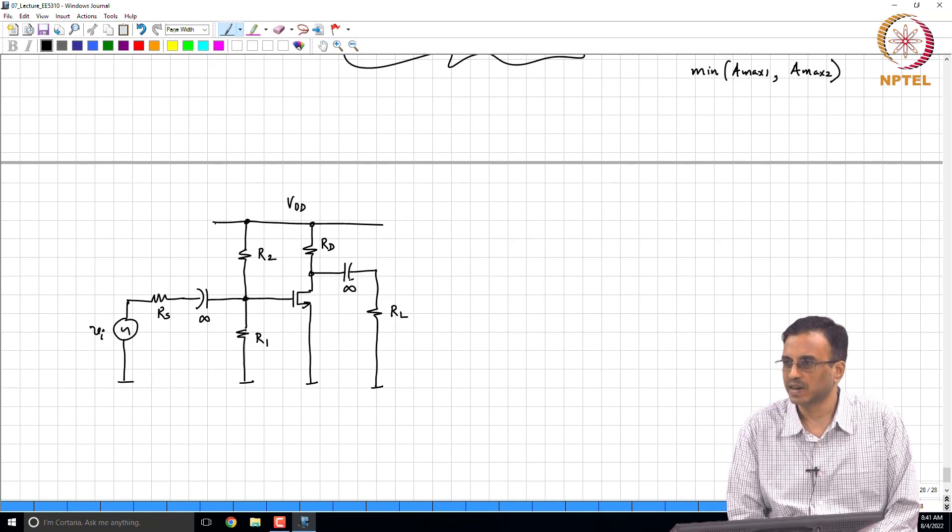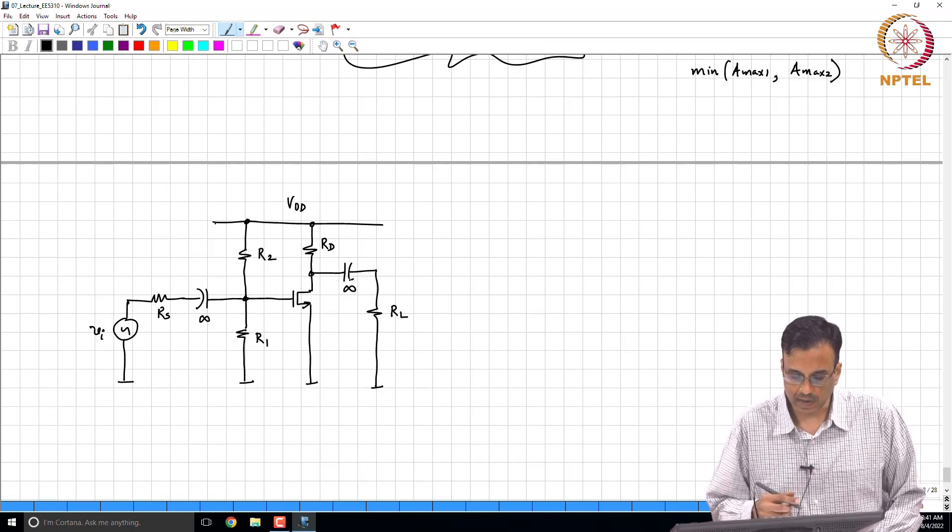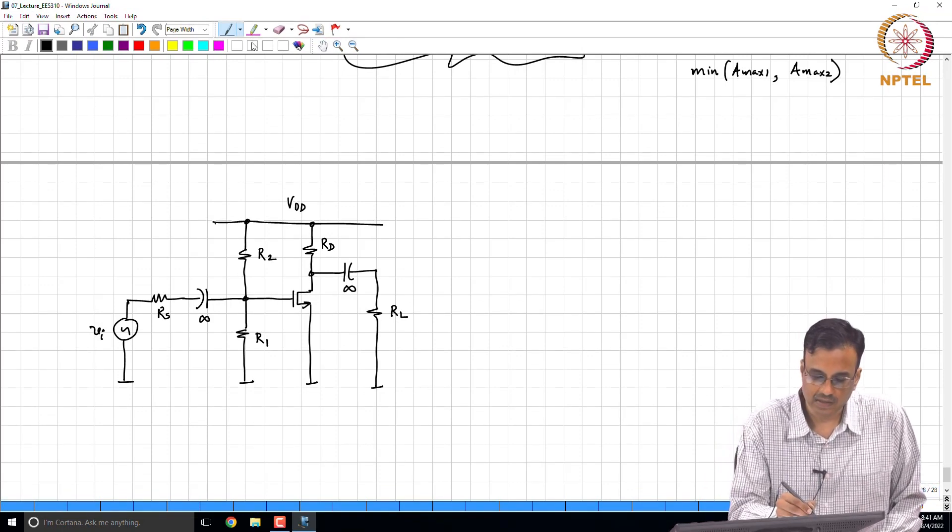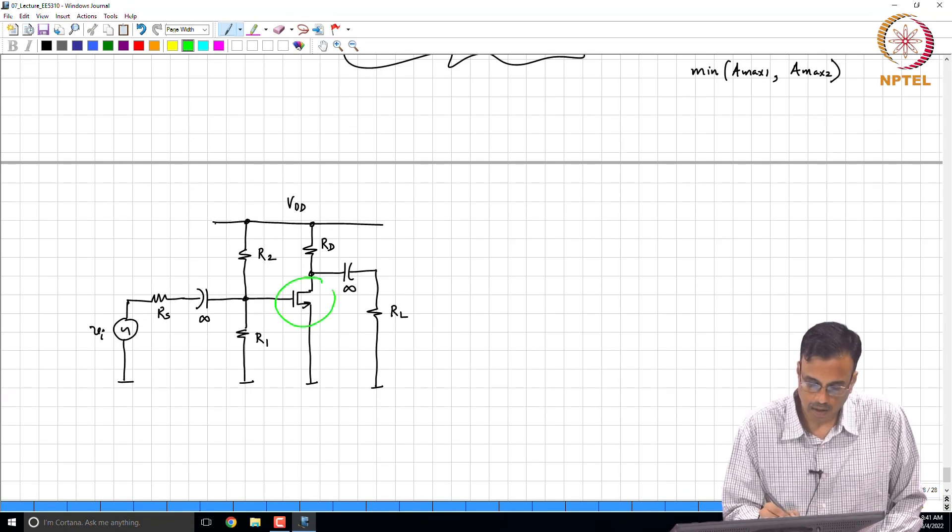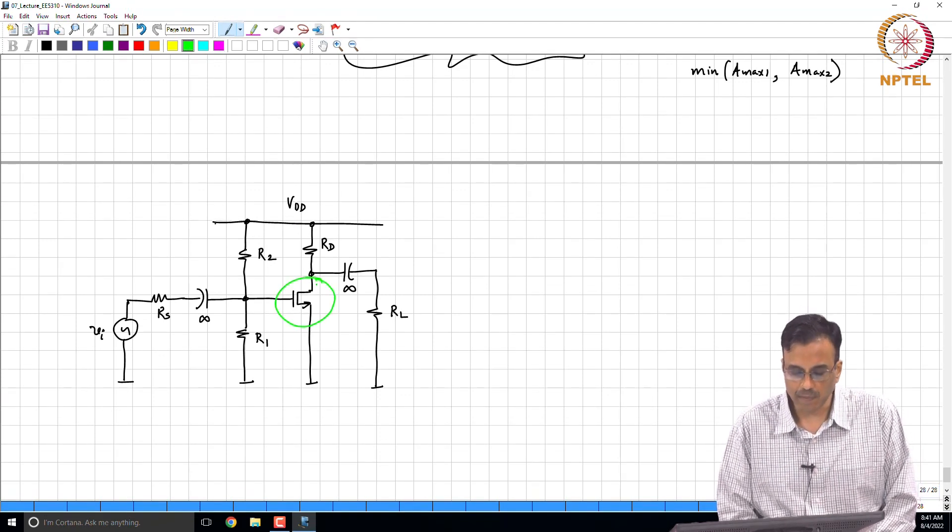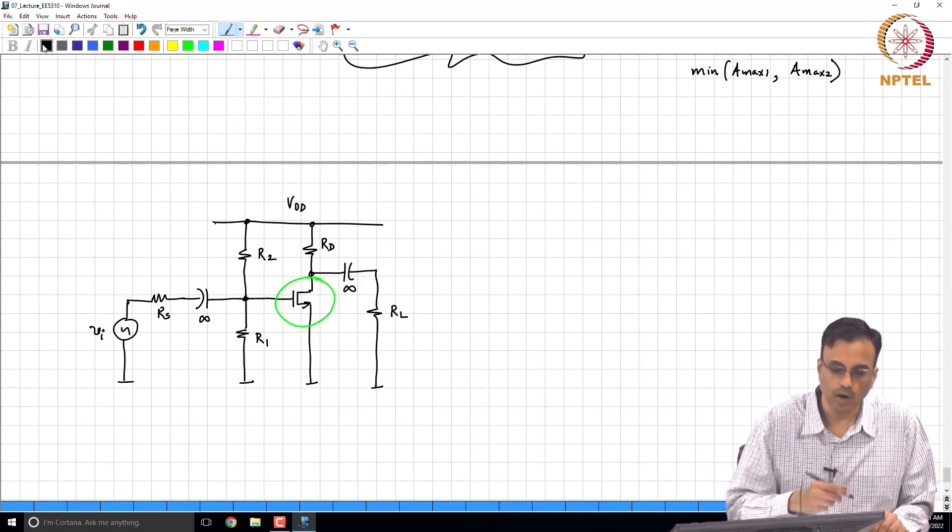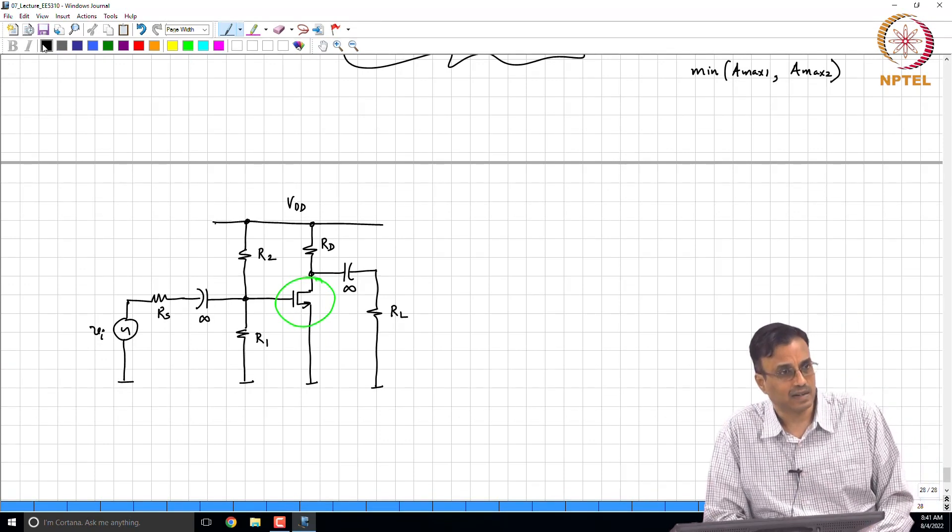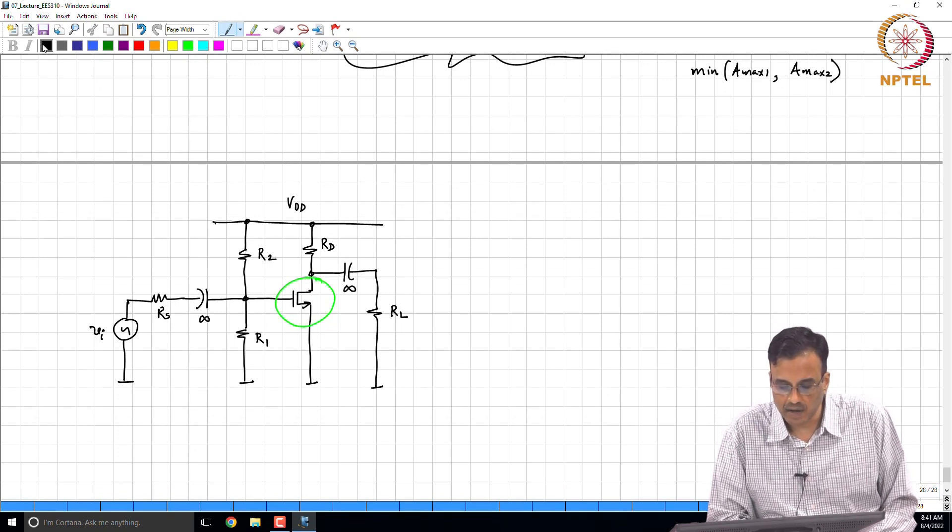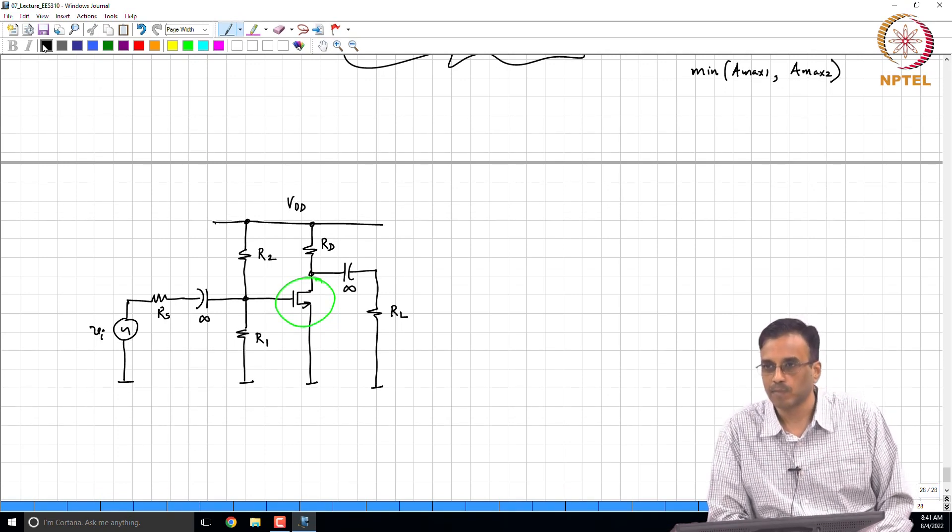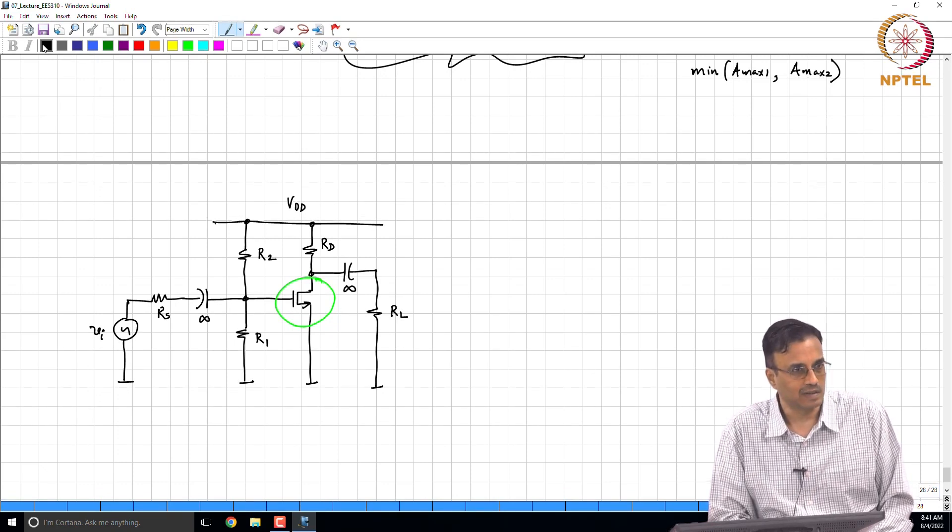The capacitors we know, we cannot put infinite capacitors, we will put finite ones. And what I am referring to is basically the transistor itself. The transistor itself, remember the properties of the entire circuit depend critically on the fact that the transistor is biased properly.